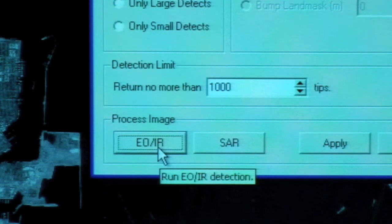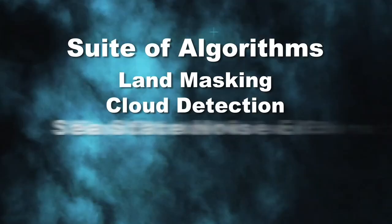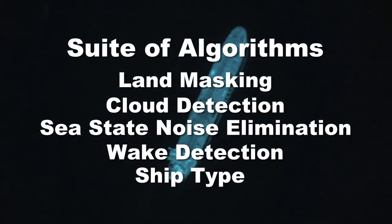With the press of a button, the Rapier Ship Detection System automatically processes an image using a suite of algorithms. These algorithms work in the background to detect and classify ships.